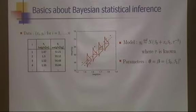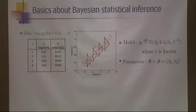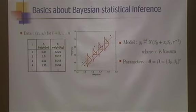In this model, beta0 is the intercept of the regression line and beta1 is the slope. Beta1 is the unknown quantity investigators are interested in because it represents how much weight women will gain on average for a unit change in height. With data, model, and parameters in hand, we can perform Bayesian statistical inference.